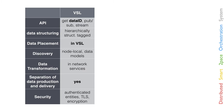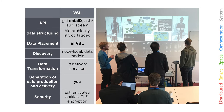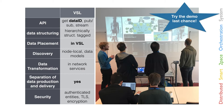We looked at all the different aspects: API, data structure and placement, discovery, data transformation, separation of data production and delivery, and security. You can see most properties in the demo that is still running today — today is the last chance to look at it. Thank you for listening.